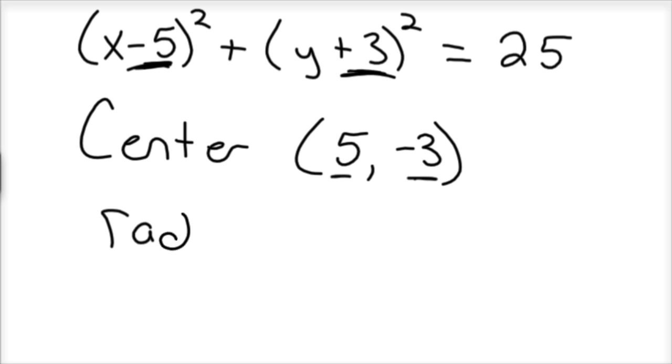Notice how the signs changed. Okay, and then that makes the radius square root of 25, which is just 5. So there's one form of the problem.